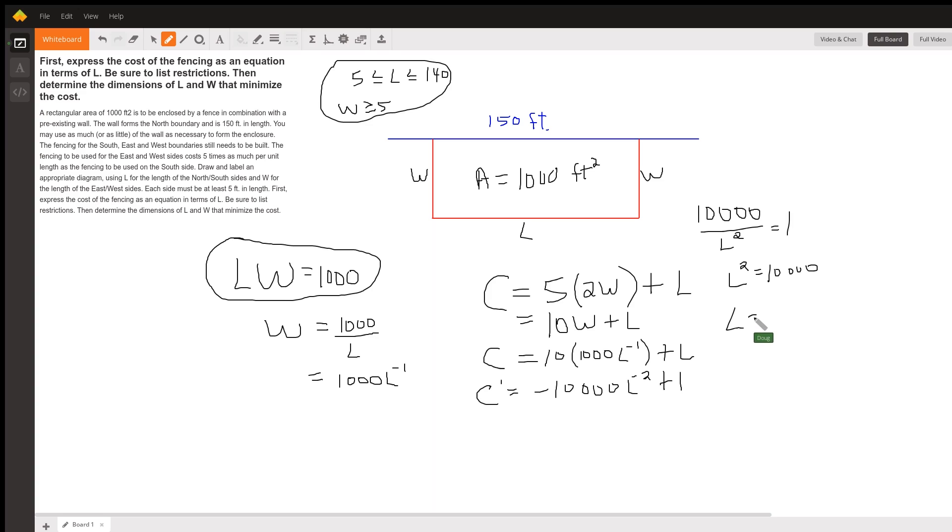Take the square root of both sides, plus or minus 100. But of course, based on these restrictions, L has to be between five and 140. So we can reject the negative value in the context of this problem.